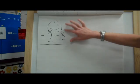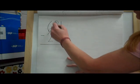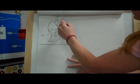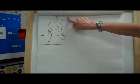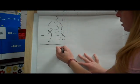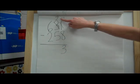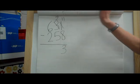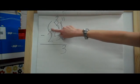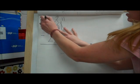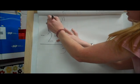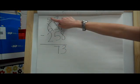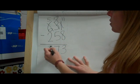All right, 1 minus 8, we can't do. So we have to go next door. 3 becomes a 2. And 1 becomes 11. 11 minus 8 is 3. 2 minus 5, we cannot do. If we only have 2, we run out before we take 5 away. So we go next door. 6 becomes 5. 2 becomes 12. 12 minus 5 is 7. And 5 minus 2 is 3.